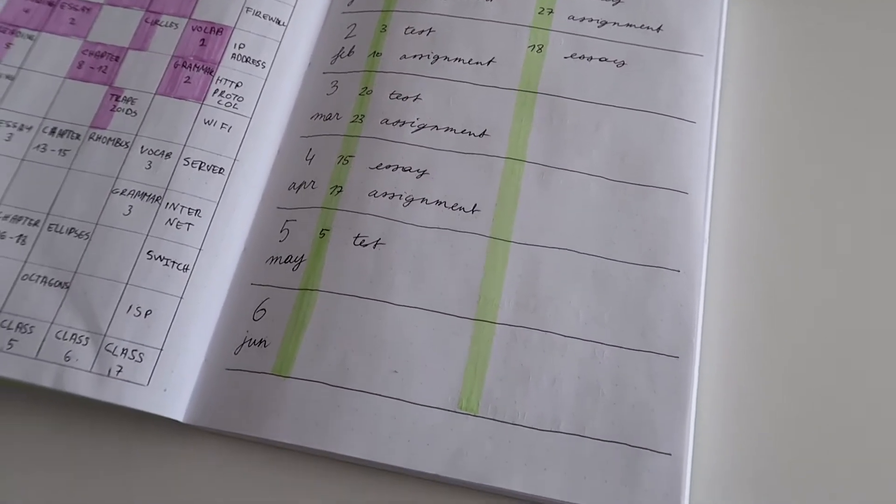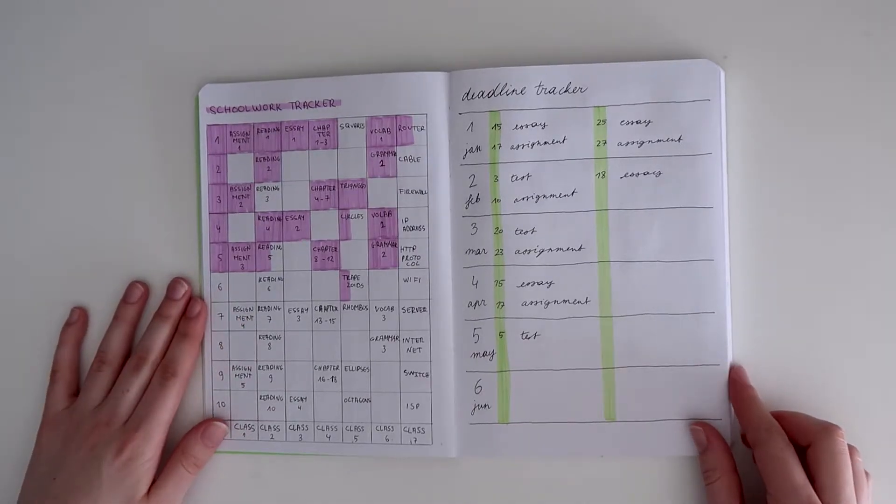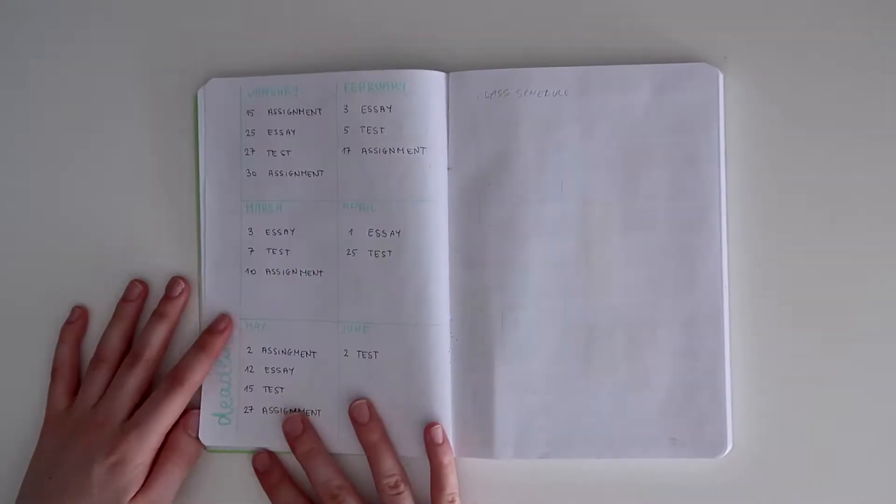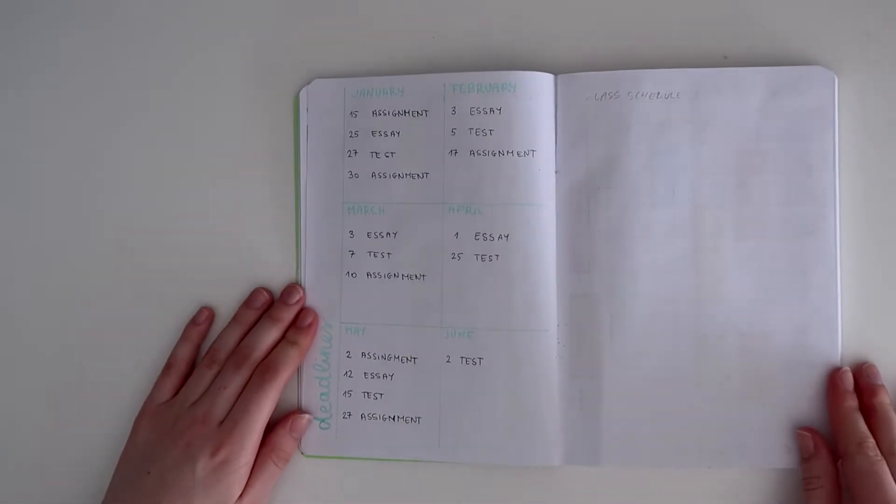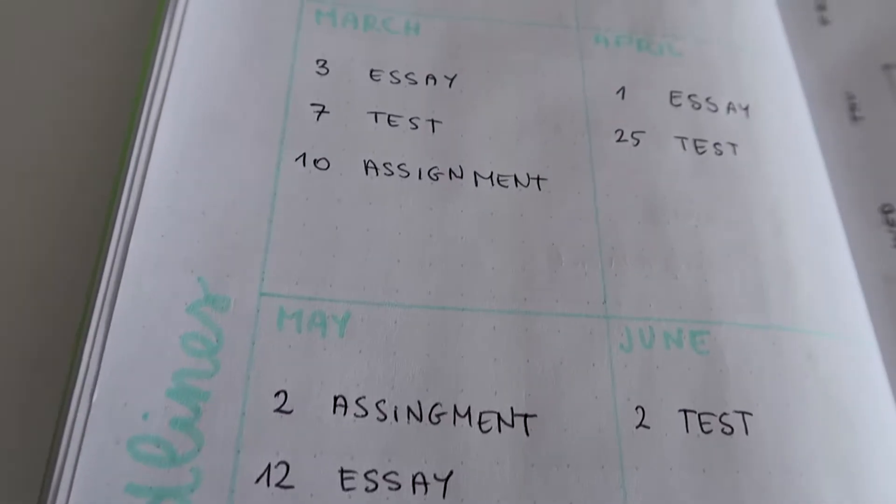This is a really simple spread. You just write boxes for every month and then you just write the date down. It's really simple, it's really easy and it helps a lot.